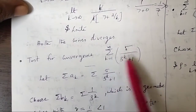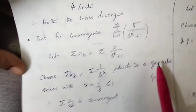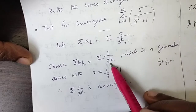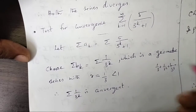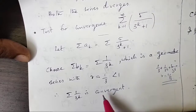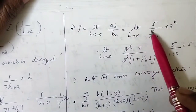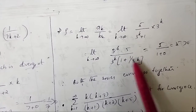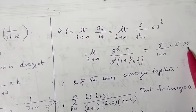Next: σ(5/(3^(k+1))). The dominant term is 3^k, so choose σbk = σ(1/3^k), which is a geometric series with r = 1/3 < 1, so it is convergent. Finding ρ: limit as k→∞ of ak/bk — taking 3^k common from the denominator, terms simplify and as k→∞ we get ρ = 5. This is finite and positive, so since bk is convergent, the given series also converges.